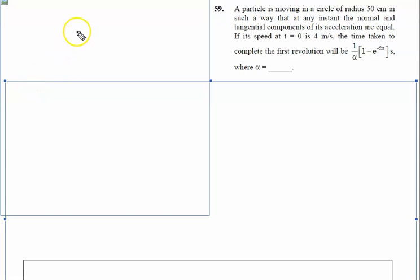A particle is moving in a circle of radius 50 cm, so 50 by 100 meters. In such a way that at any instant, the normal and tangential components of its acceleration are equal. At any instant, both are equal.